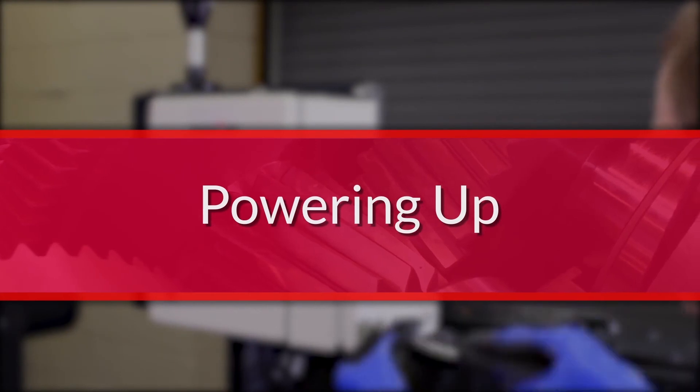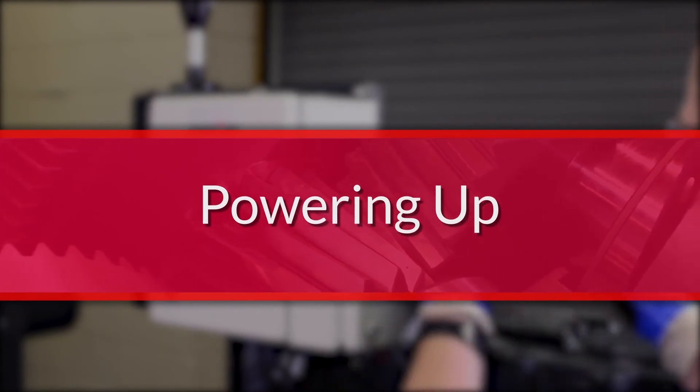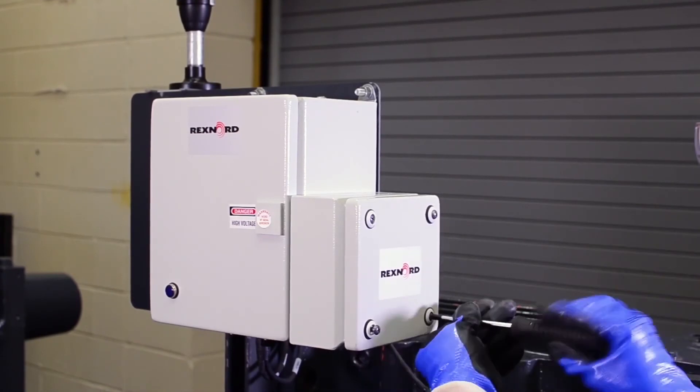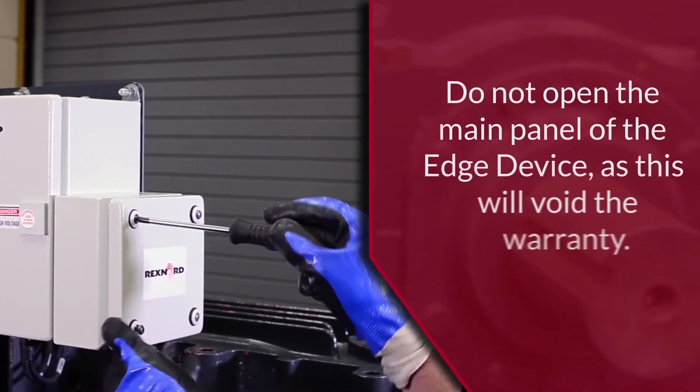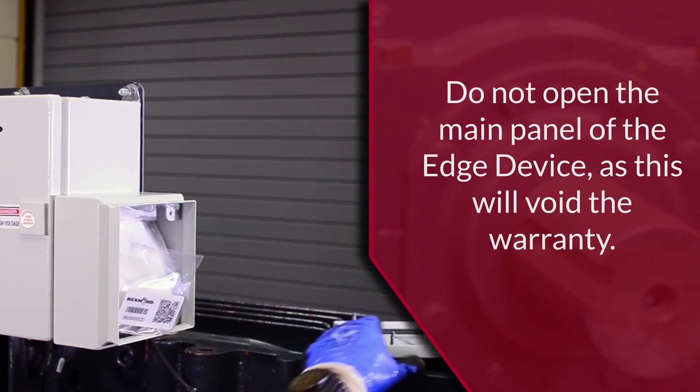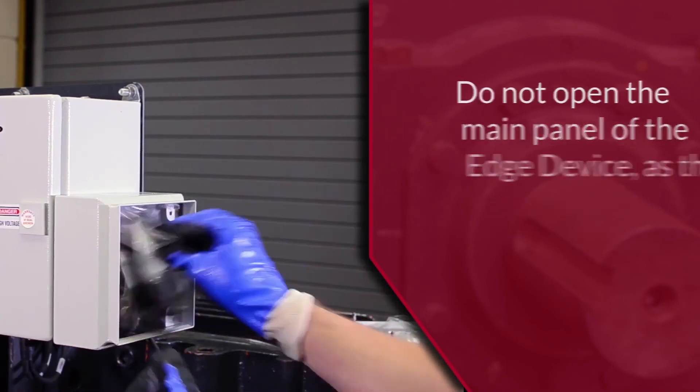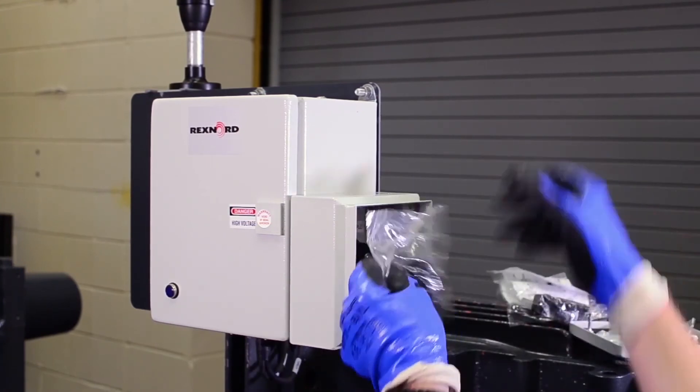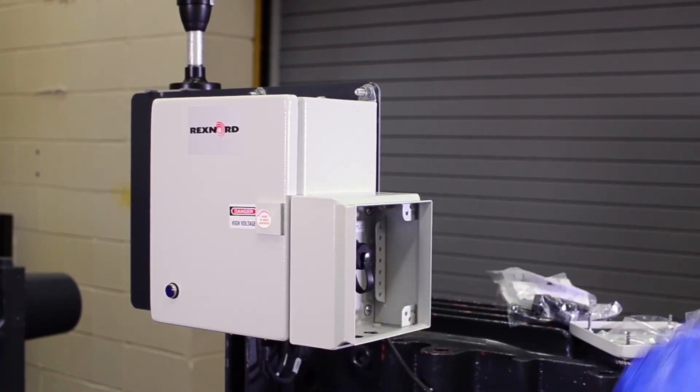Start by removing the four fasteners of the interface box on the edge device. The screws only require a quarter turn to loosen. Do not use power tools on these screws. Inside you will find connectors for the AC power plug and RJ45 data cables. Two QR code tags for the gearbox are also included.